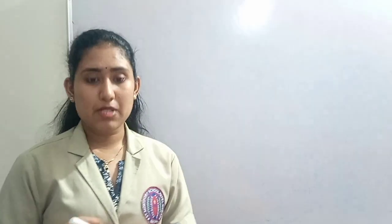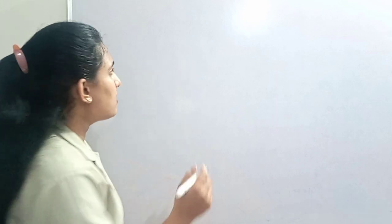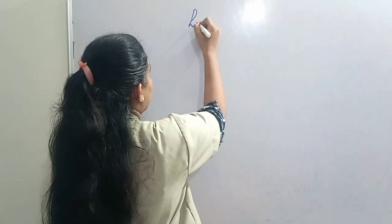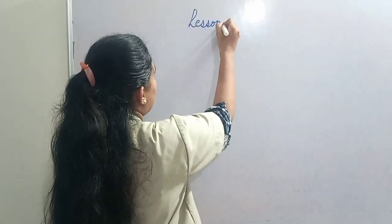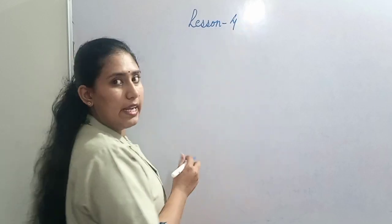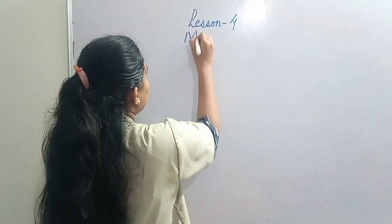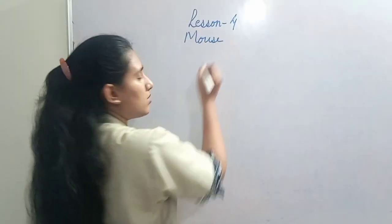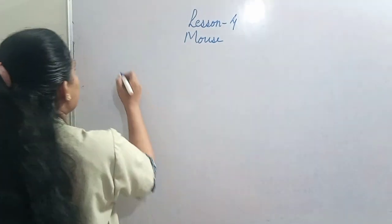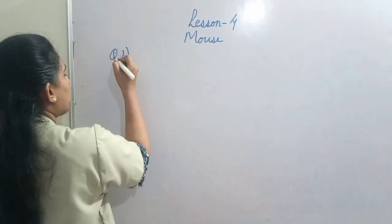In today's video I am going to only teach you how to write down the question answers, and I will be explaining the question answers. In your classwork copy, first of all start a fresh lesson - write the heading 'Lesson 4', then write the heading 'Mouse'. After that, your first question should be ready.